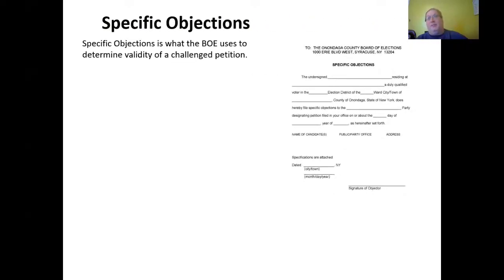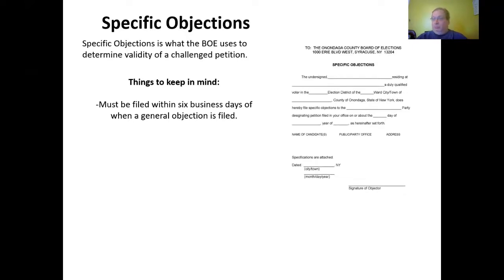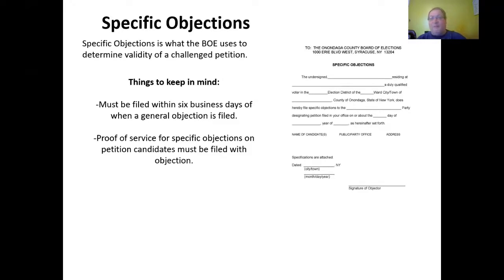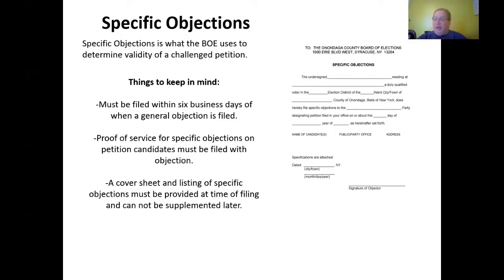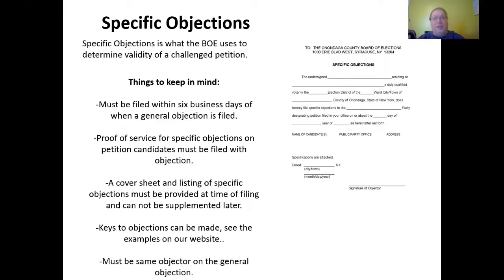Specific objections are what the BOE uses to determine the validity of a petition. They must be filed within six business days of when a general objection is filed. Proof of service for specific objections on petition candidates must be filed with the objection. A cover sheet and listing of specific objections must be provided at the time of filing and cannot be supplemented later. The specific objection must reference the same objection listed on the general objection.